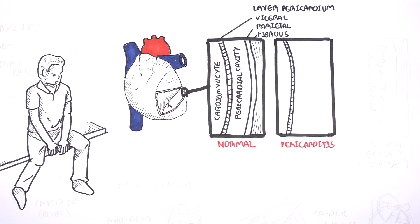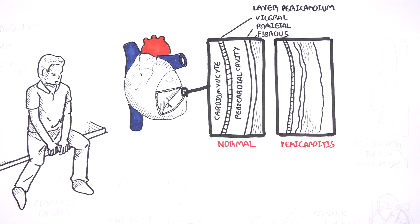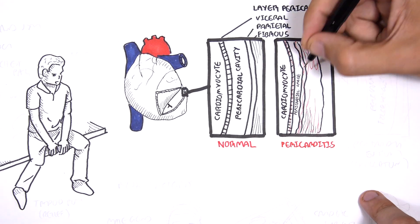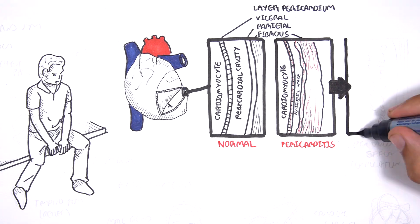In pericarditis, there is inflammation of the pericardium which results in narrowing of the pericardial space and possibly some scarring.